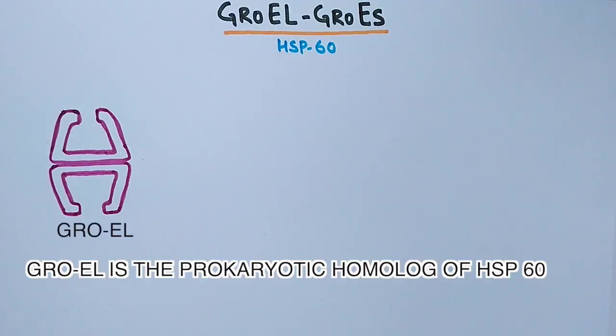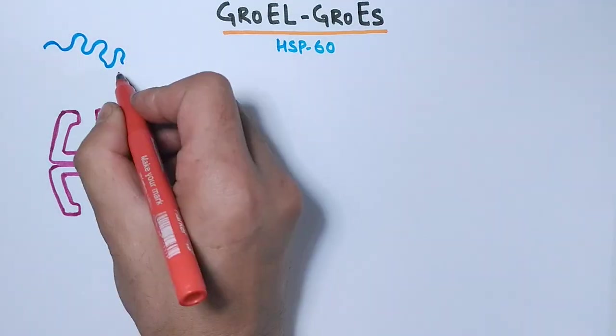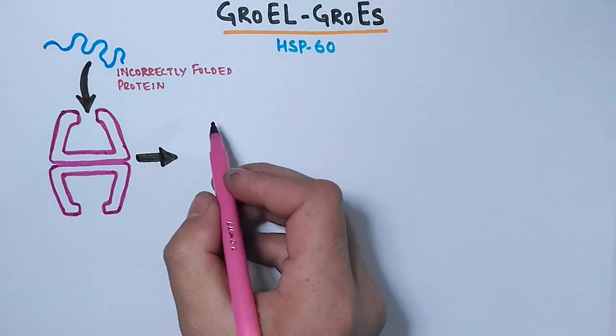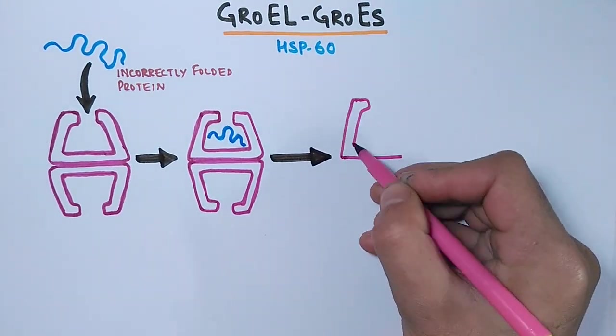In the working mechanism, this GroEL chaperone is barrel-shaped in its 3D structure. The GroEL has capacity to take in the proteins into its hollow space, into its cavity. These chaperones are translated during stressful conditions of the cell when the proteins get into misfolded states or get off the folding pathway. The GroEL takes in the protein and the protein binds to the hydrophobic patch on the interior side of the open cavity of GroEL.